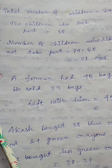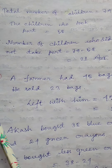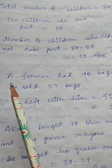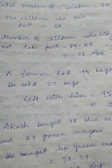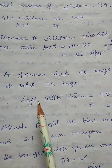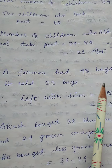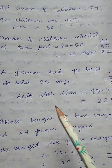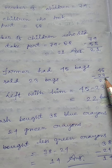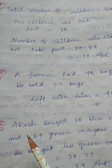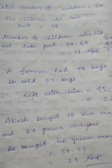Then number 5: a farmer had 45 bags of rice in the godown. He sold 23 bags of rice. How many are left with him? So left him with 45 minus 23. So 22 — answer 22.